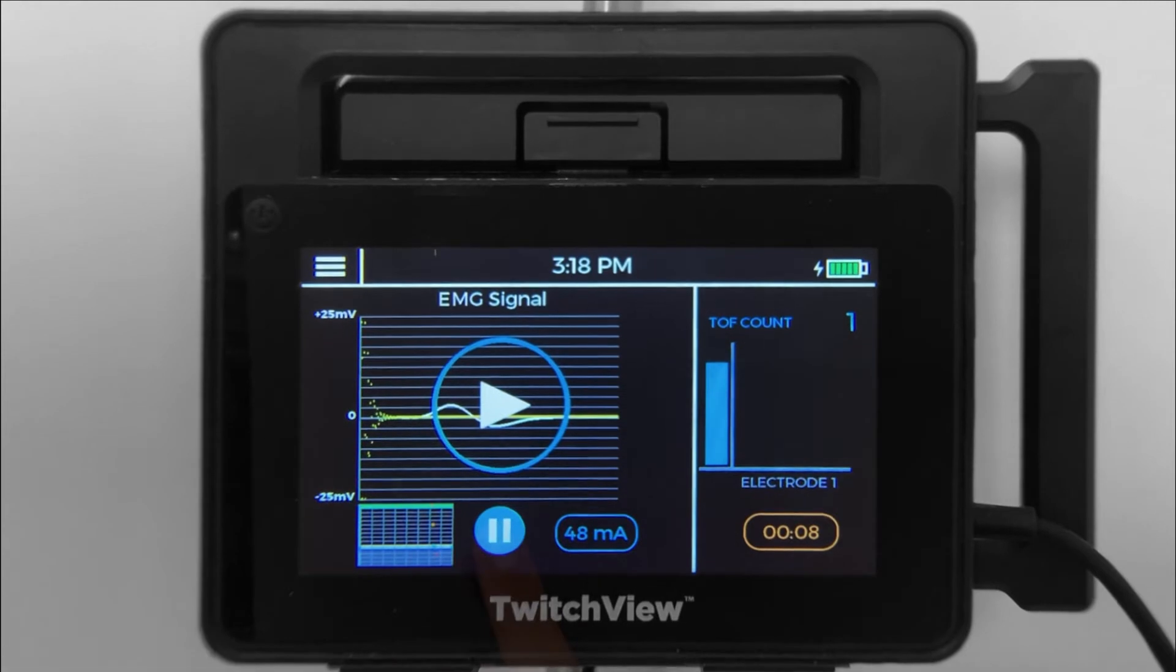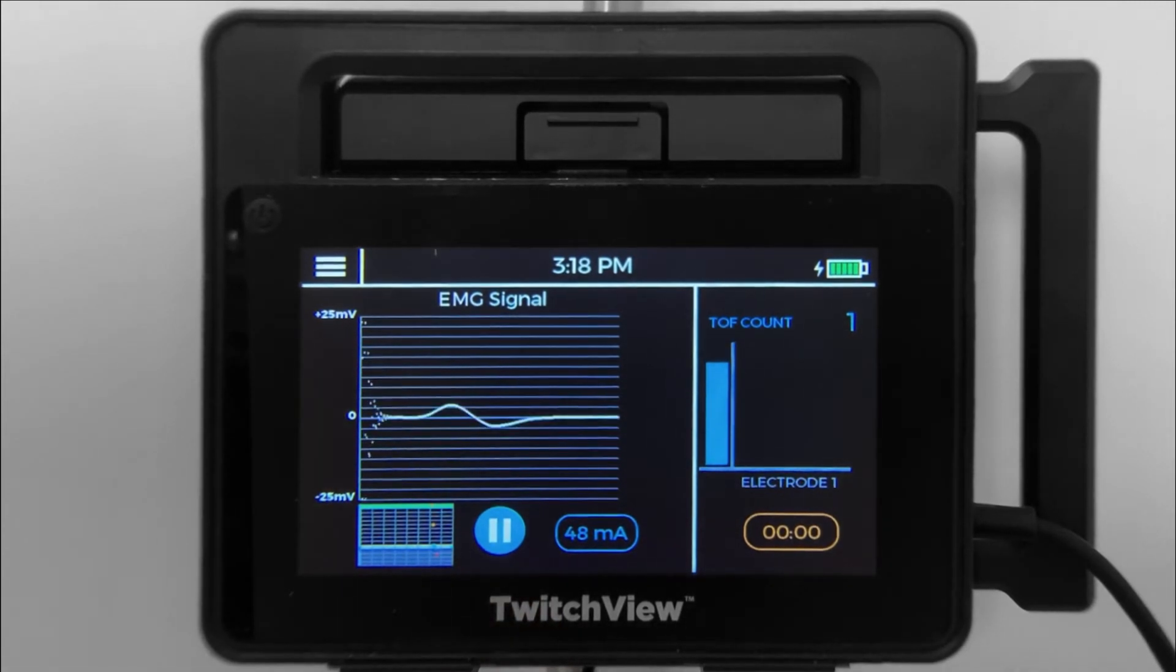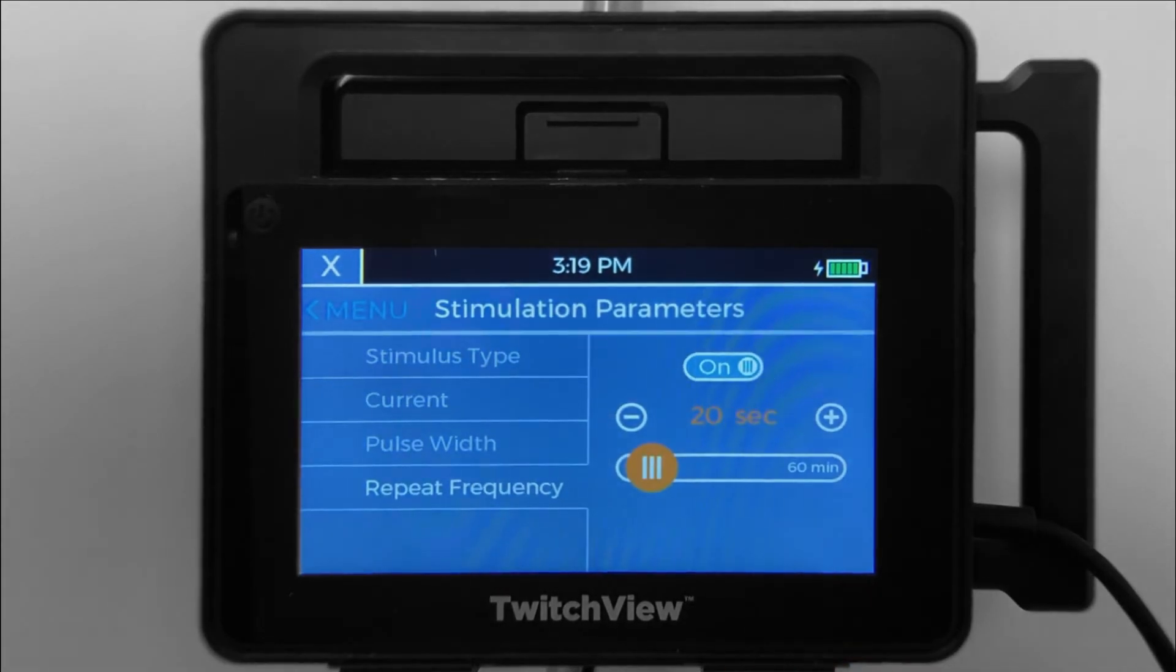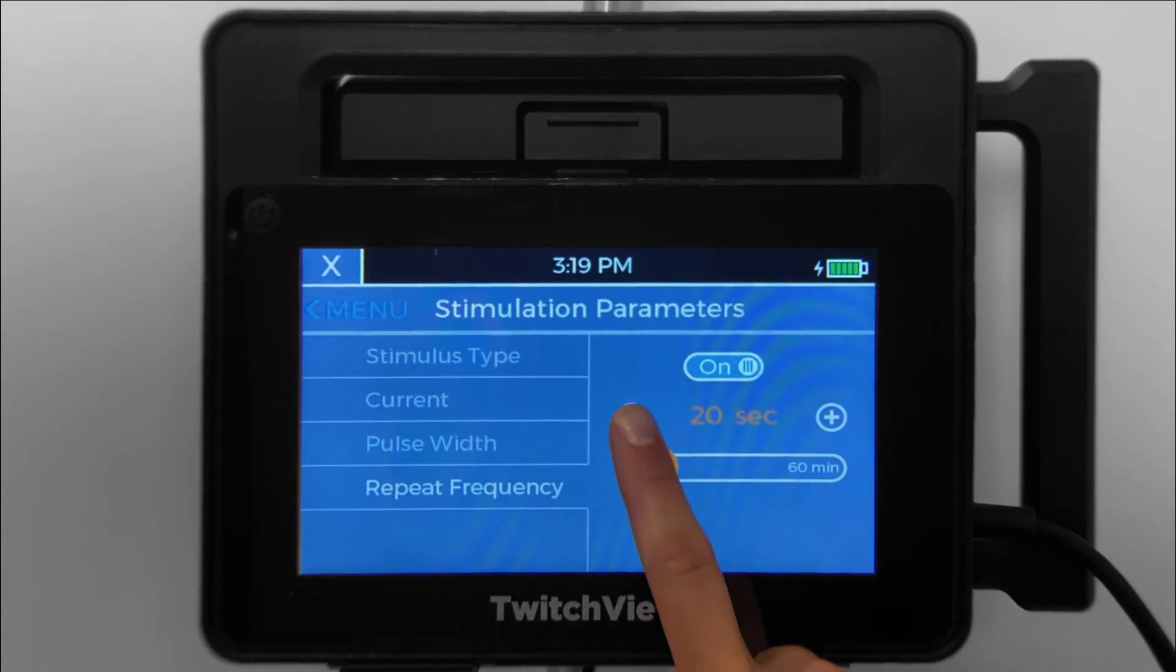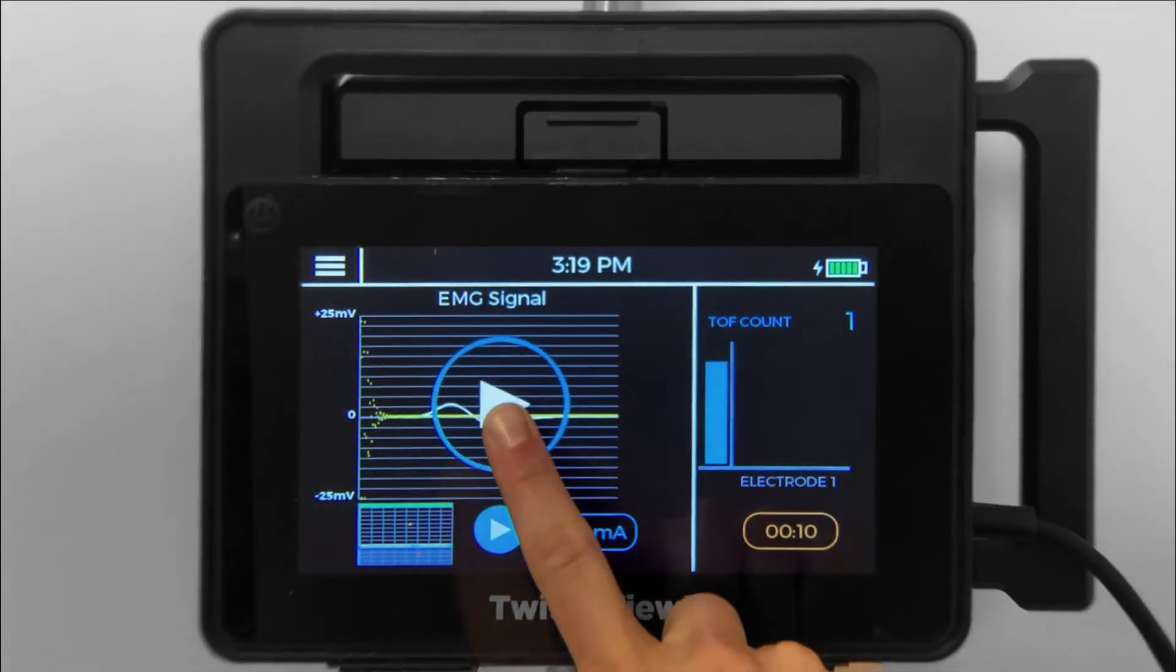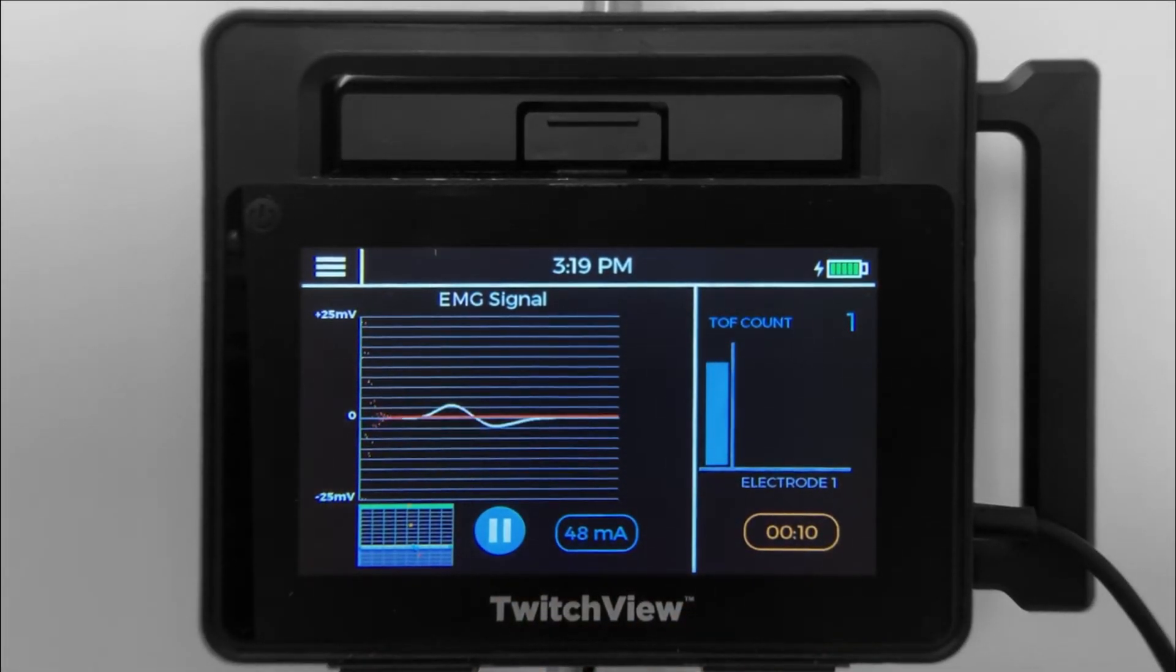A STAT measurement can be taken by pressing pause and then play. To change the measurement interval, touch the countdown timer and toggle to the desired time. Press play to resume monitoring.